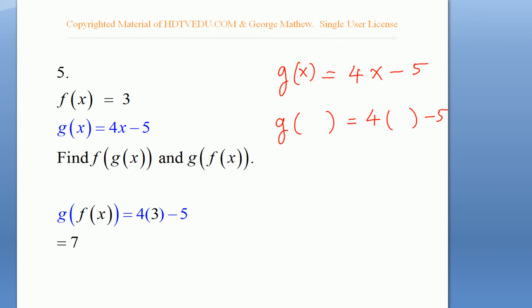And what do we get? What is f of x? f of x is 3. So what is 4 times 3? 12 minus 5. So what is g of f of x? 12 minus 5, and that is 7.